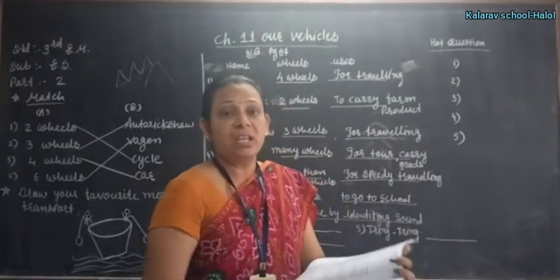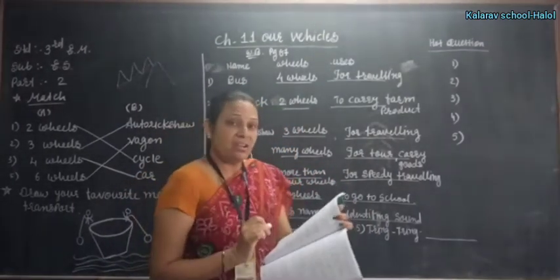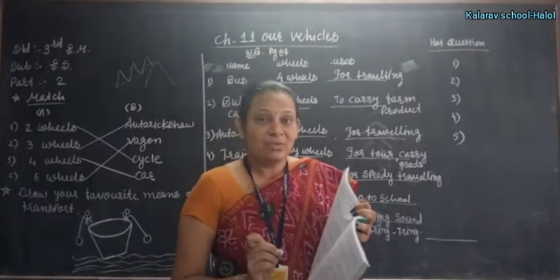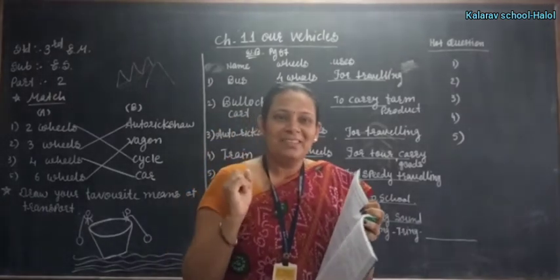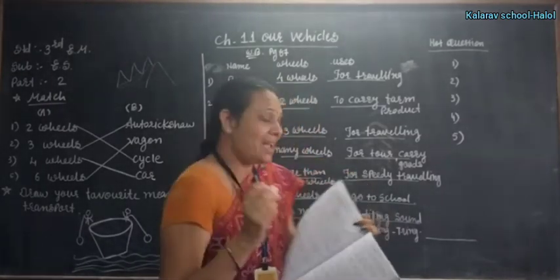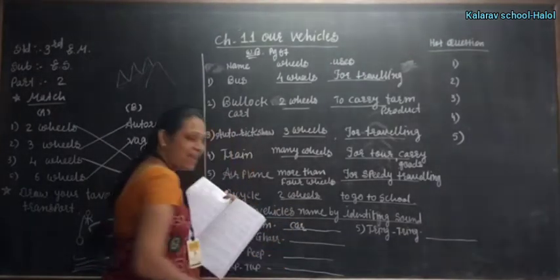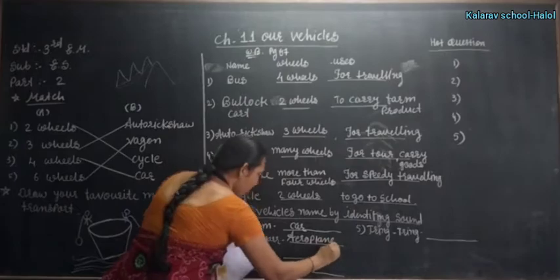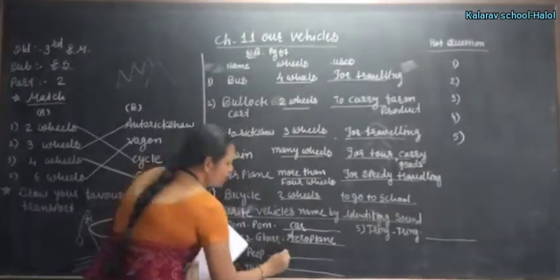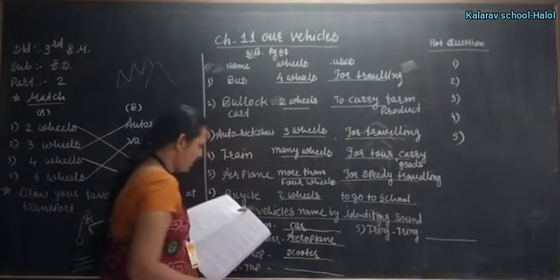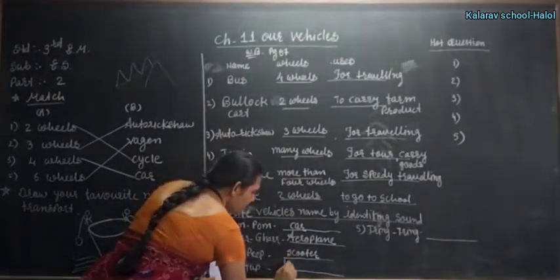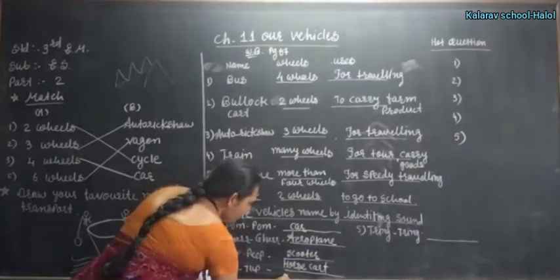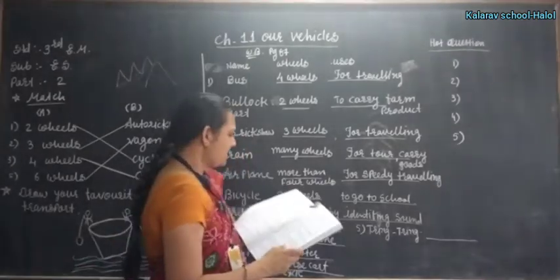Now here students, we see the different sounds here given of the vehicles and we have to identify the vehicles. Pom pom: what is the sound of pom pom? Which vehicle has the sound pom pom? It's the car. Grr: it is the sound of the aeroplane. Pimp pimp: scooter or bike. Tup-tup: it is the sound of the horse cart. And tring-tring: it is the cycle or bicycle.